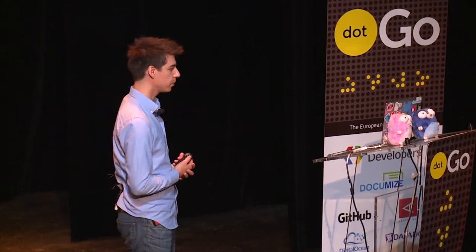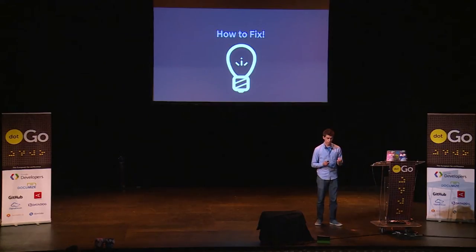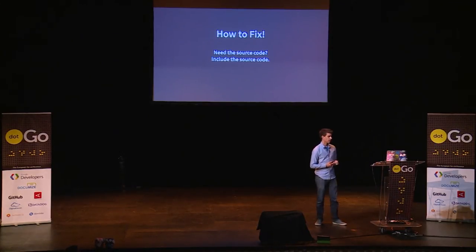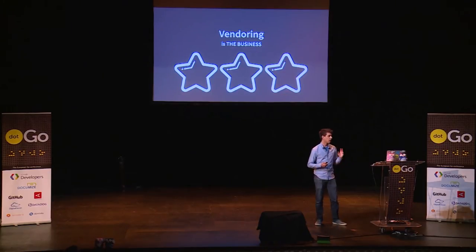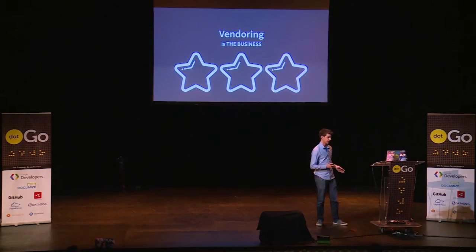Or we can go back to the drawing board. If we want the minimal information necessary to reproduce the source code of all our dependencies, it turns out that minimal information is the source code itself. So that's the idea behind GoDep save with the copy flag — GoDep save minus copy. It does what GoDep always did, producing the list of all dependency packages, but additionally copies the source code of all those dependencies into a subdirectory in our repo.